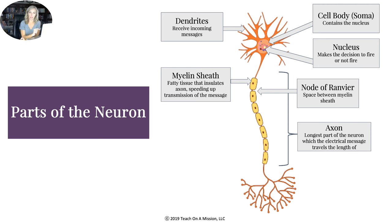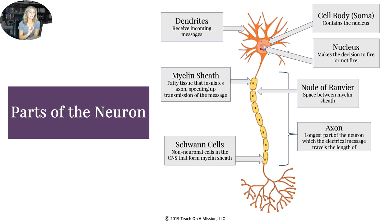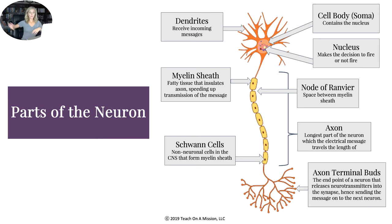The points between the myelin sheath are called the nodes of Ranvier, named after the person who first found them. It is simply the space between the myelin so the message can jump across. Inside the myelin are Schwann cells — non-neuronal cells that form the myelin sheath. The job of the Schwann cell is to generate myelin.